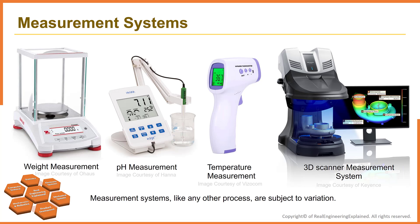Determining the capability of a measurement system is an important aspect of many quality and process improvement activities. Generally, in any activity involving measurement, some of the observed variability will be inherent in the items that are being measured, and some of the variability will result from the measurement system that is used. So one variation is coming from the part and the other one is coming from the measurement system itself.